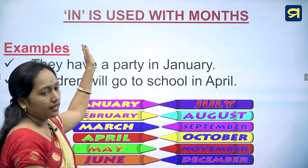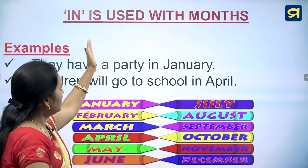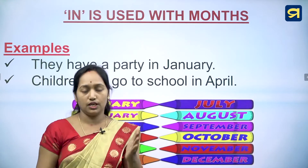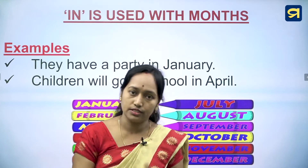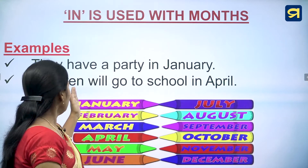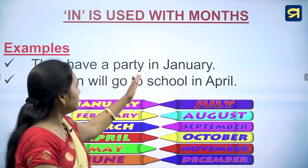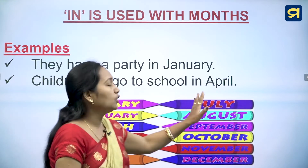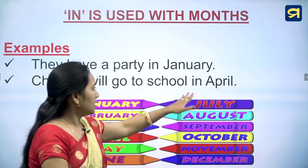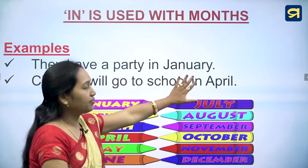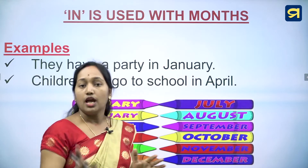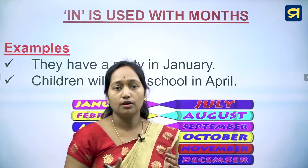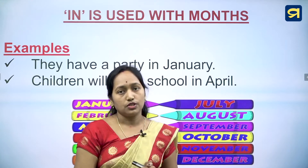Preposition 'in' is used with months — January, February, March, etc. For example: they have a party in January, or children will go to school in April. When discussing months, we use the preposition 'in'.